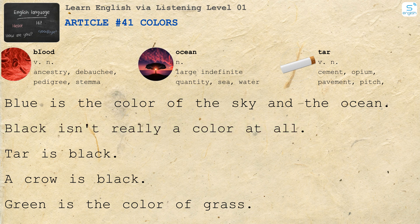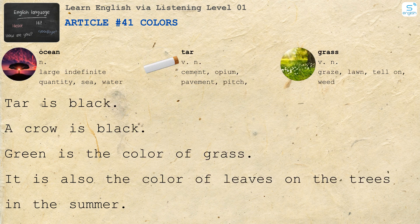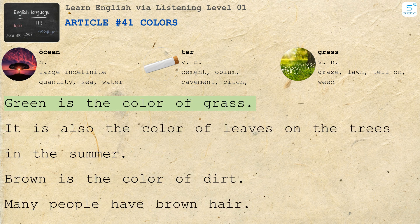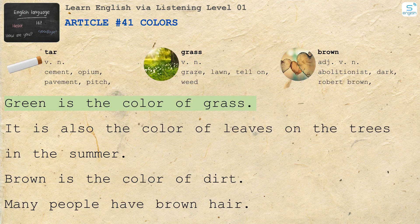Blue is the color of the sky and the ocean. Black isn't really a color at all. Tar is black. A crow is black.